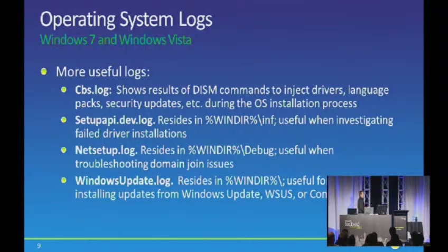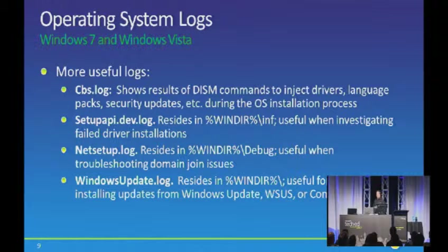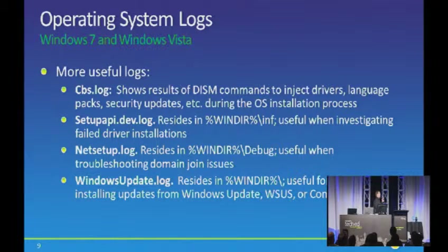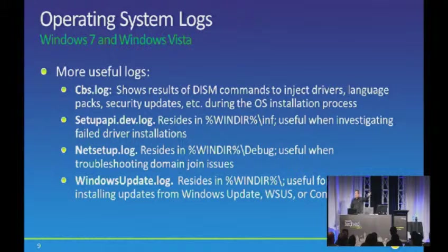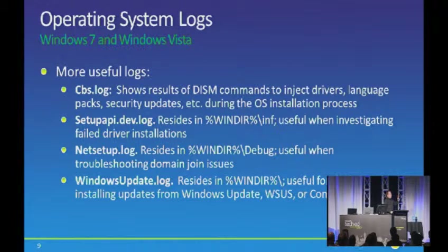The last log on the list is windowsupdate.log, which is useful in situations where you want to figure out what's going on with WSUS, a Config Manager install software update step, or a standard Windows update execution. It logs two different types of useful information: which server am I talking to - am I talking to the internet, a WSUS machine, or my Config Manager SUP - and for each update being installed, was it successful or not successful, and any issues encountered.